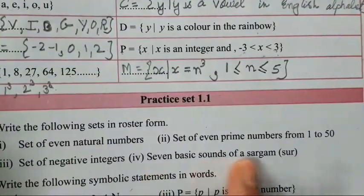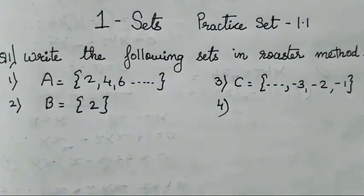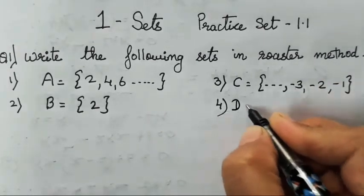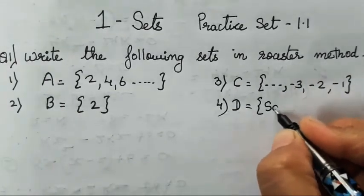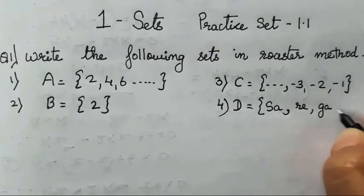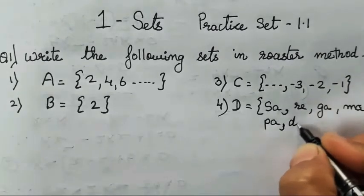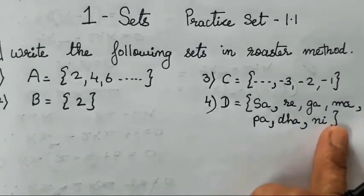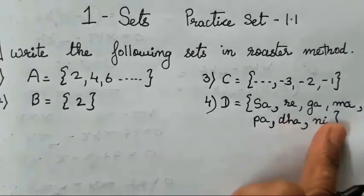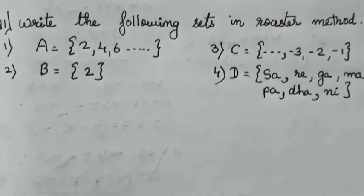Now let's solve the fourth one: seven basic sounds of a sargam — that is Sur. We all know the seven basic sounds of a sargam, the musical sounds. I will write it as D. It is definite: Sa, Re, Ga, Ma, Pa, Dha, and Ni. These are the definite ones, so no dash, no dot, nothing will come — only curly brackets and commas to differentiate between them. This completes the first question.